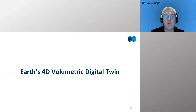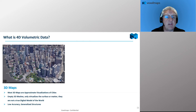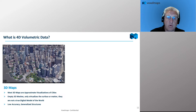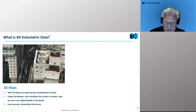Let's talk about the 4D volumetric digital twin we're creating of the planet. Standard 3D maps are approximate visualizations of cities — they tend to be empty 3D meshes that virtualize the surface but are not a true digital model. They tend to be low accuracy and generalize the structure, so when you zoom in it gets a little mushy and can be deceiving in terms of the structures themselves.